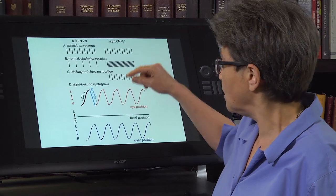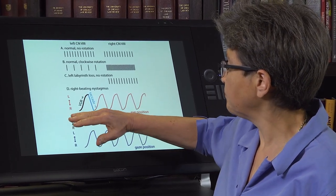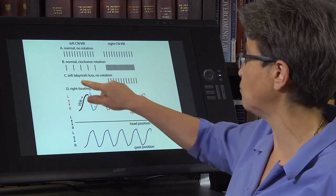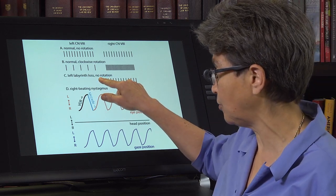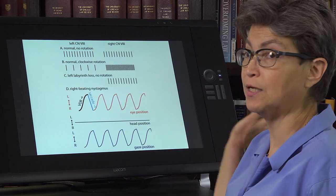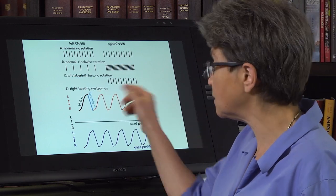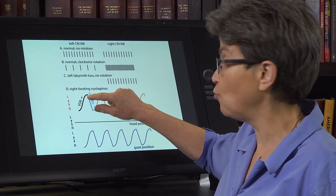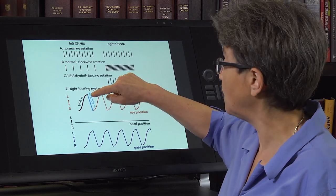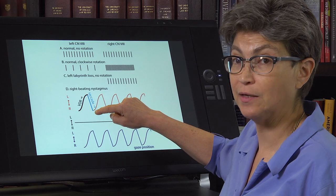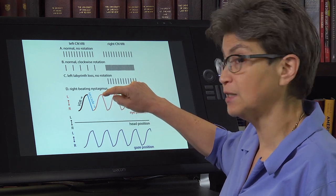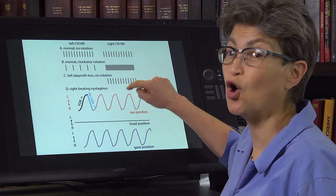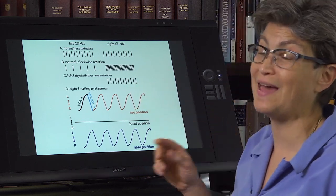And so here what we're looking at is eye position. In this case, we've lost the, it's the same case as here, we've lost the left labyrinth. We think we're rotating to the right. So we make a VOR towards the left side. We come to the end of the orbit and saccade back to the right. A VOR to the left, a saccade back to the right. And this just continues on and on and on. And that is nystagmus.